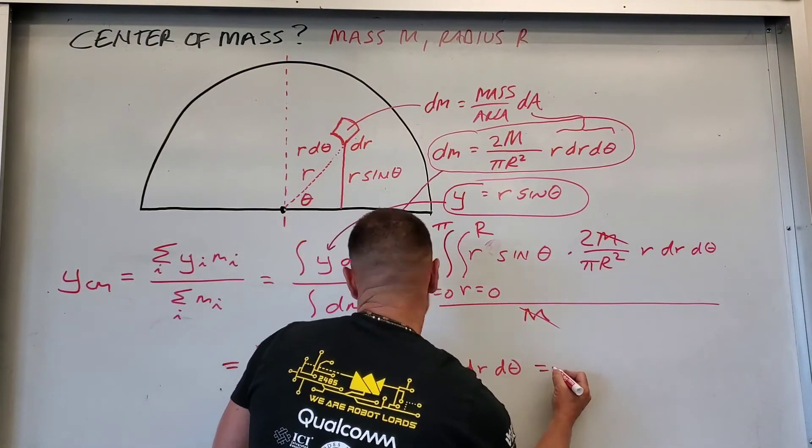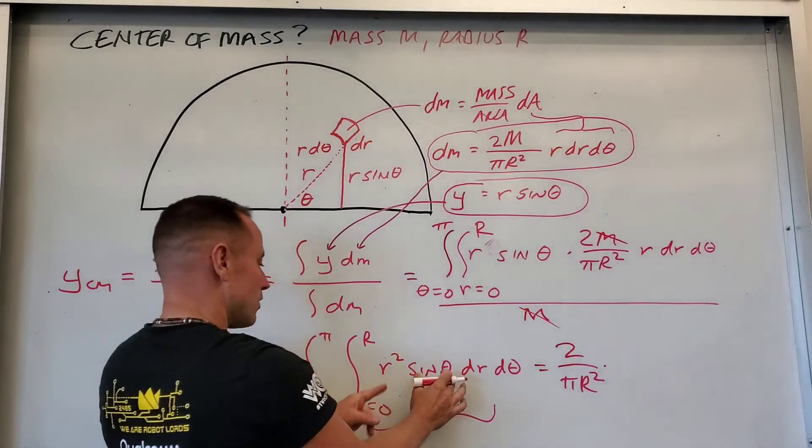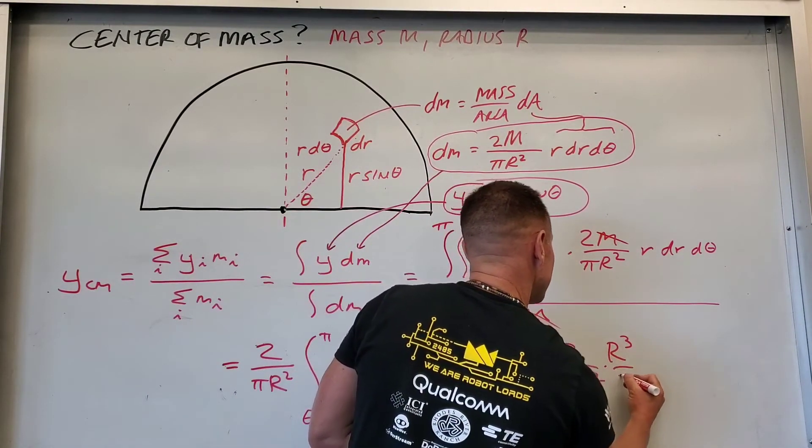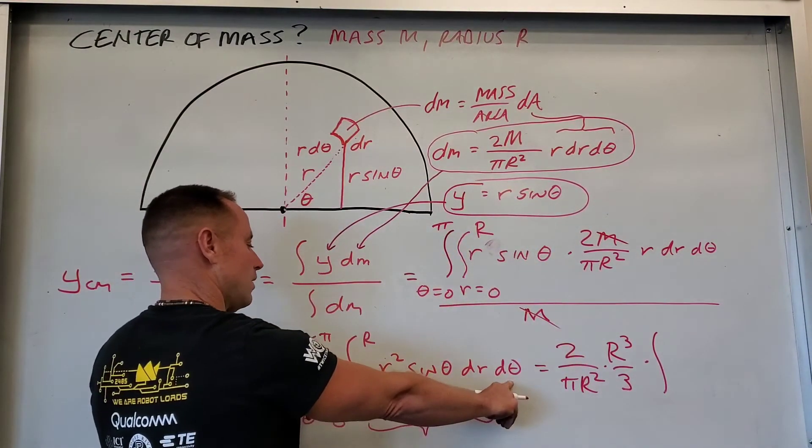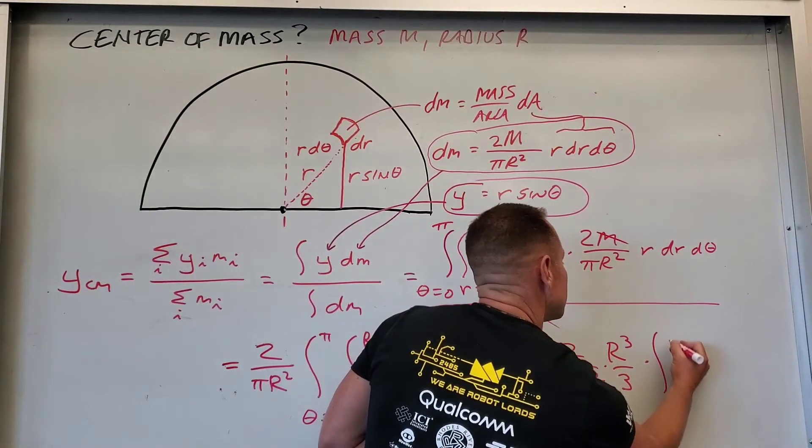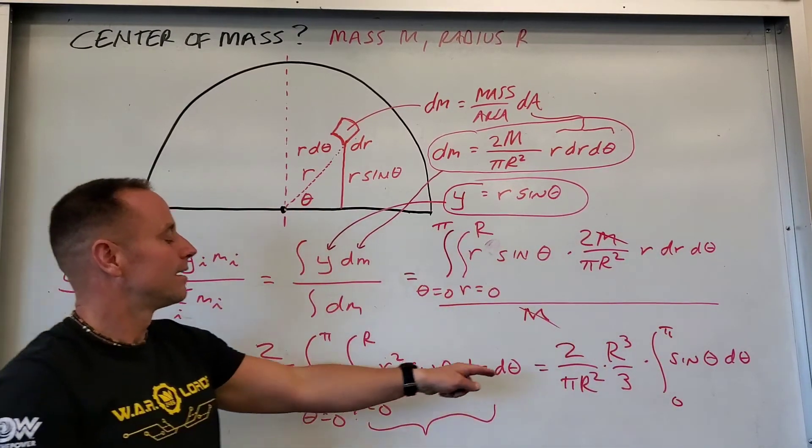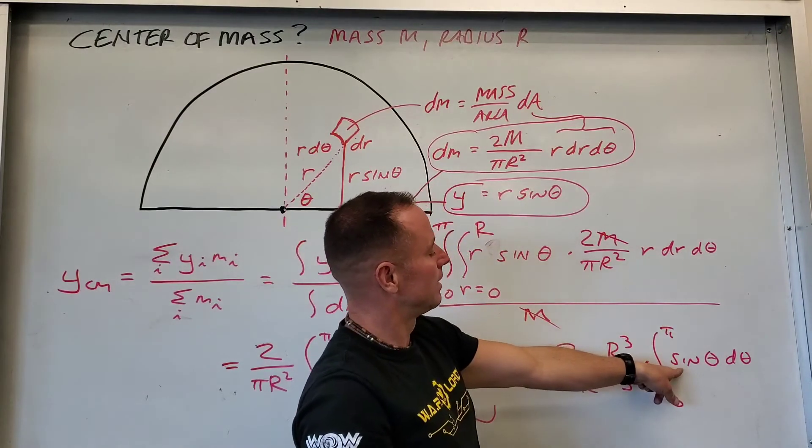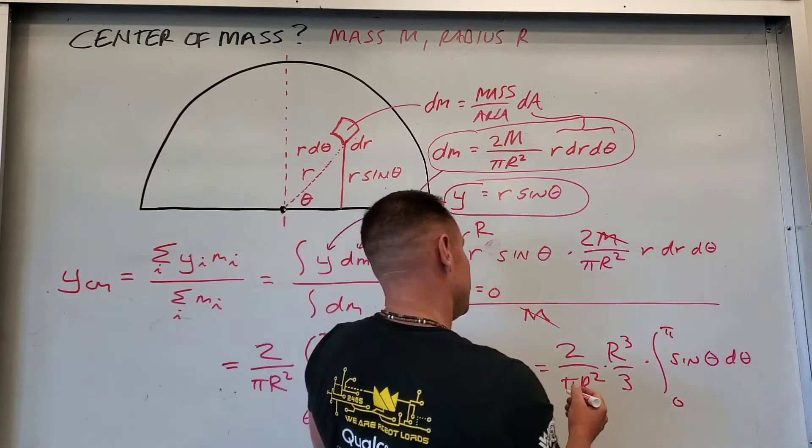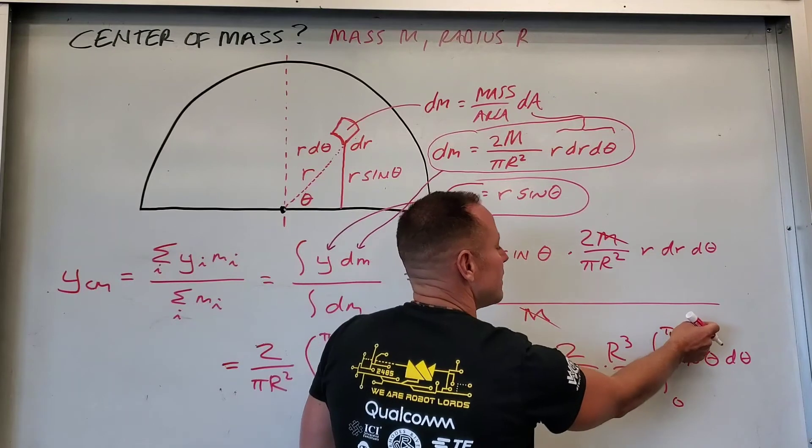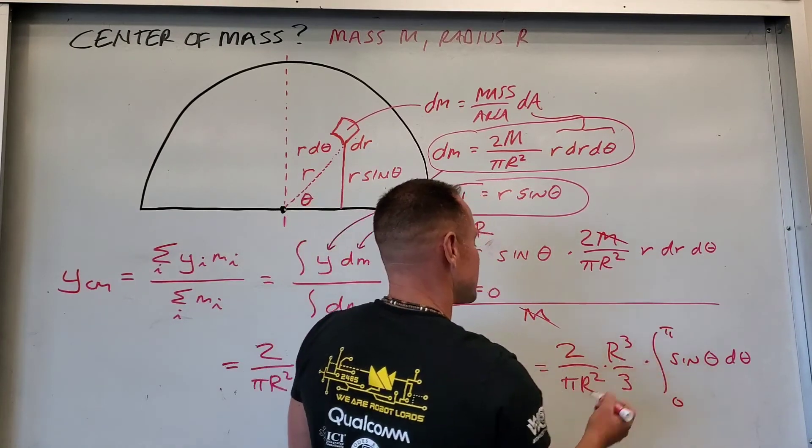And so just to slow that down then, we have our constant of 2 over π r squared. We just learned from the radial integral that we're going to get big R cubed over 3. And then, in fact, all we have left then is this integral over sin θ dθ from 0 to π. 0 to π of sin θ dθ. Well the integral of sine, or the anti-derivative of the sine function, is negative cosine. And so we're going to get negative cosine evaluated at π minus negative cosine evaluated at 0, which is just going to give us a factor of 2.